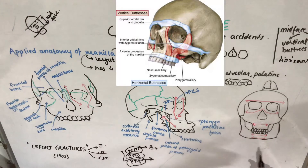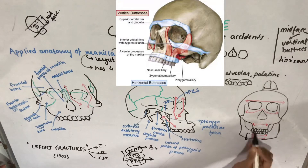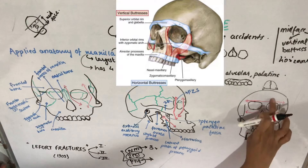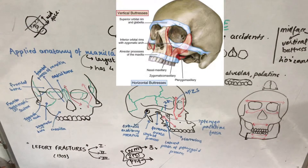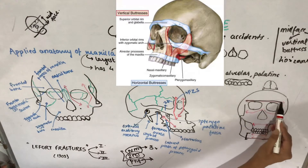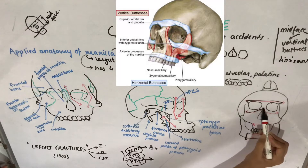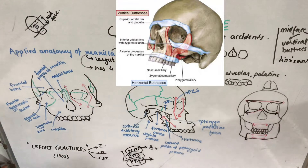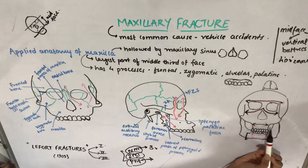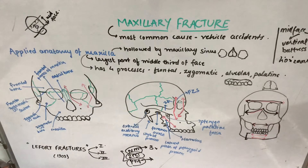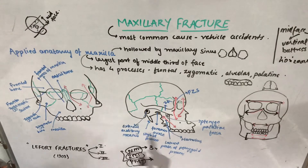Moving to the horizontal buttresses, the mid-face has several. The first is the frontal bar — the frontal bone. The second is the orbital rims. The third is the maxillary alveolus and palate. The fourth is the zygomatic process of the temporal bone.